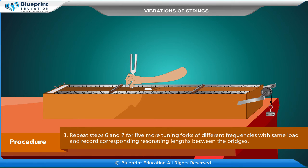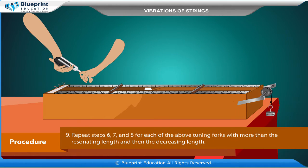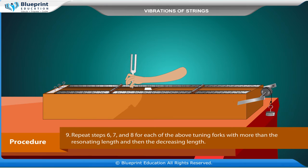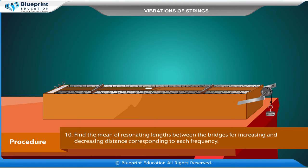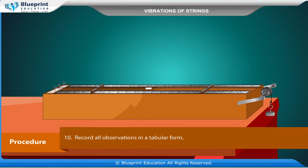Repeat the steps for 5 more tuning forks of different frequencies with the same load, and record the corresponding resonating length between the bridges. Repeat the steps for each tuning fork with more than the resonating length and then decreasing length. Find the mean of resonating lengths for increasing and decreasing distance corresponding to each frequency. Record all observations in a tabular form.